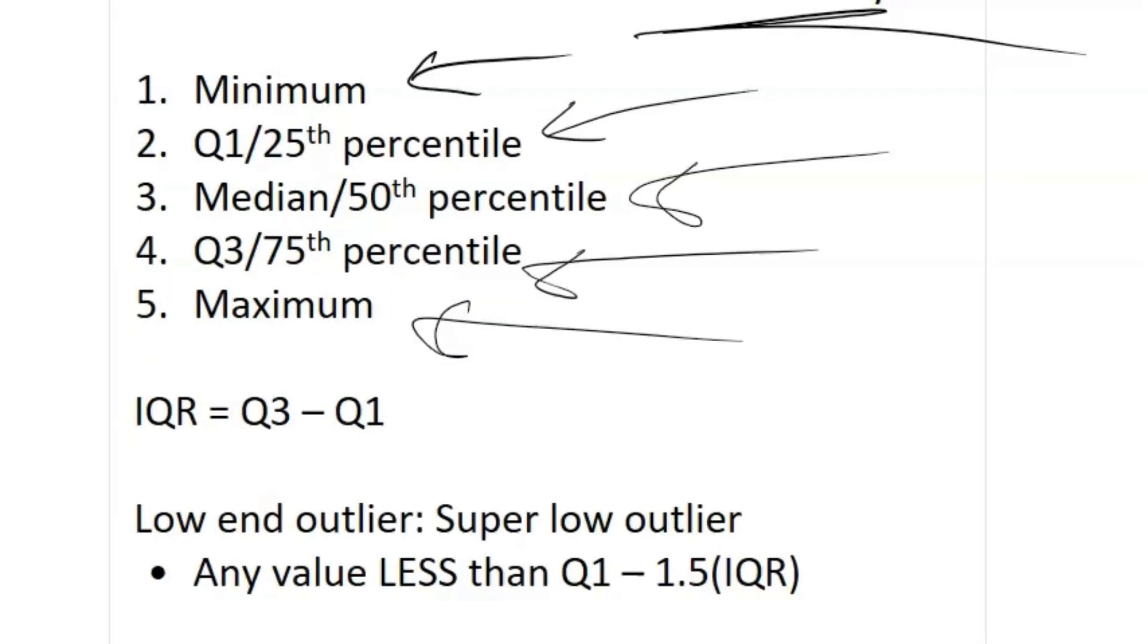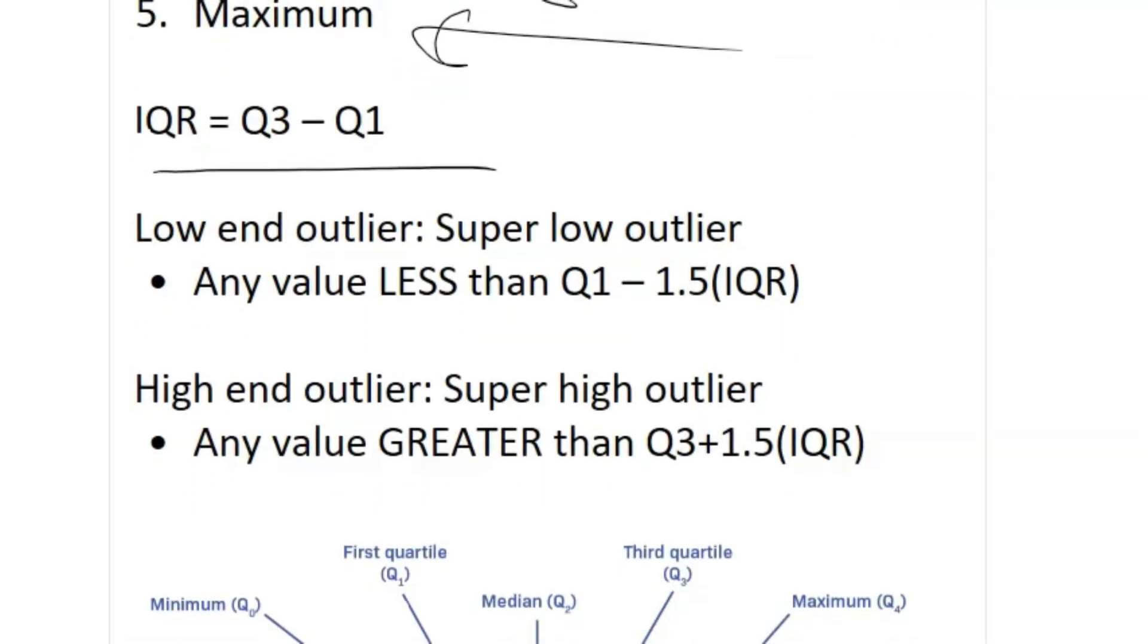Okay, so the next thing is IQR. IQR is just Q3 minus Q1. That's important because you also need to be able to describe specific outliers and their characteristics, that being low-end outliers or high-end outliers.